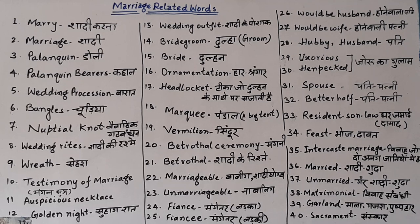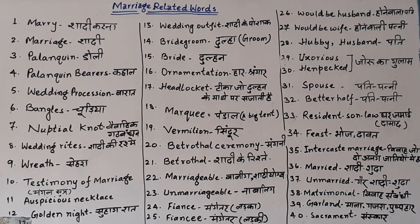The twenty-ninth word is 'uxorious' or, in other words, 'hen-pecked,' which means a husband who is dominated by his wife — 'jo apni biwi ka ghulam ho.' A husband dominated by his wife is called 'uxorious' or 'hen-pecked.' The thirty-fourth word is 'spouse' or 'better half' — both husband and wife can be referred to as 'spouse' or 'better half.'